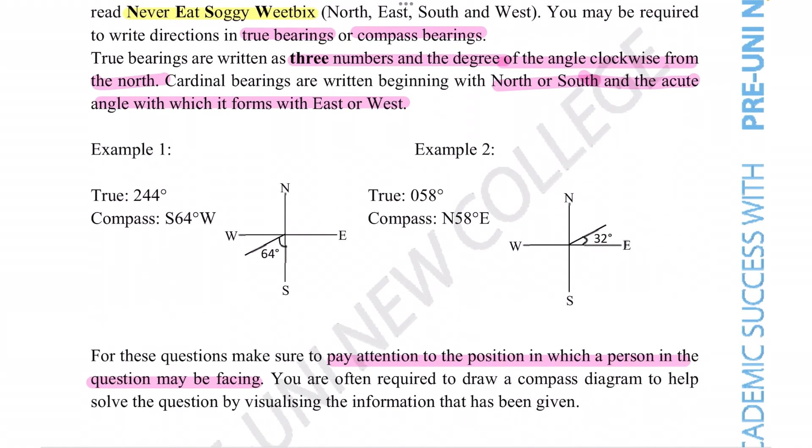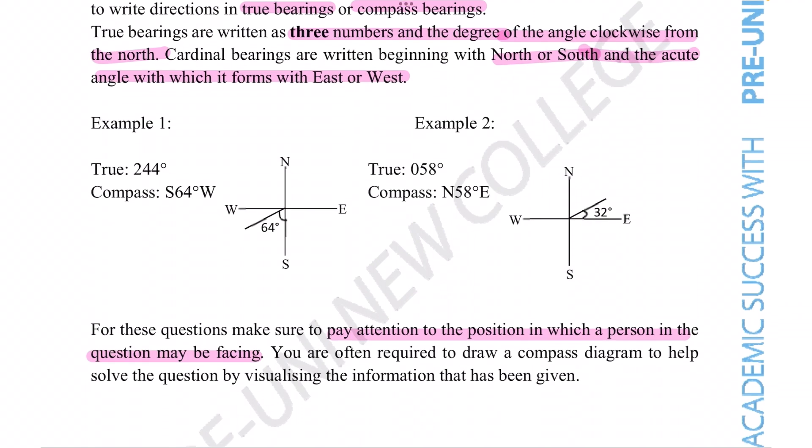Now we're told that there are two big ways of expressing direction, and that is in true bearings or in compass or cardinal bearings. They're basically the same thing but they just express the same number slightly differently. True bearings start off at north and you see what direction you're currently in from north.